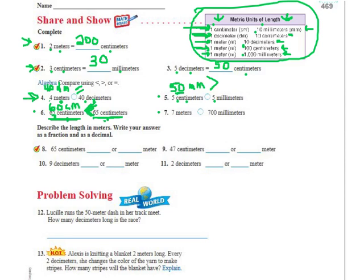Number seven — 7 meters or 700 millimeters. I want to change the meters into millimeters. Changing meters into millimeters, I'm multiplying by 1,000. 7 times 1,000 is 7,000 millimeters. So I'm comparing 7,000 millimeters to 700 millimeters. 7,000 is bigger — greater than.